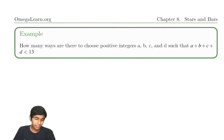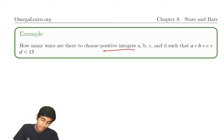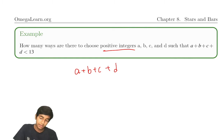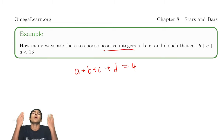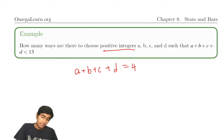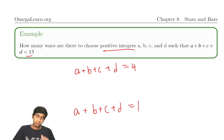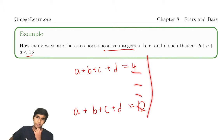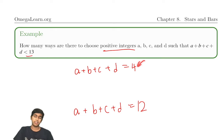What can the sum a plus b plus c plus d even equal? Since they're positive integers, at the very least it's one plus one plus one plus one, so it's at least four. At the most, it's less than 13, so 12. There are nine cases, and that would be hard to evaluate even using stars and bars for each case.